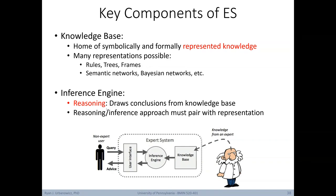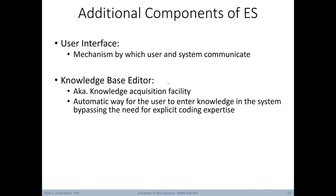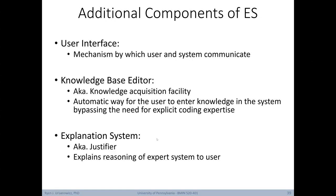In addition to the key components, expert systems have other common components. A user interface allows the user and the system to communicate. A knowledge base editor — also known as a knowledge acquisition facility — provides an automatic way for users to enter knowledge into the system, bypassing the need for explicit coding expertise, making it easier for non-computer science experts to maintain and update the system. Expert systems also often have an explanation system, also known as a justifier, responsible for explaining the reasoning in natural language to the user.